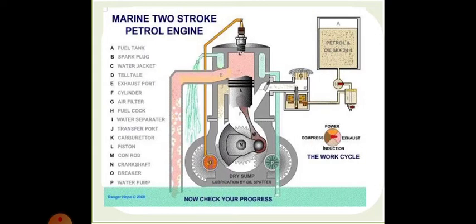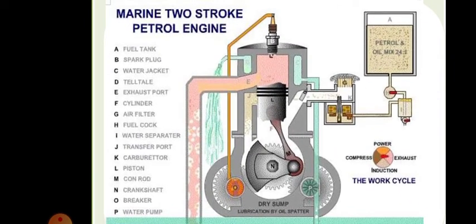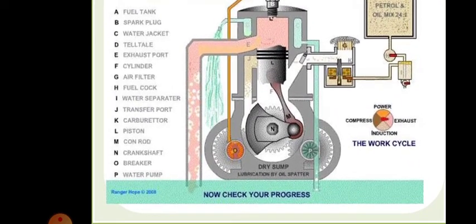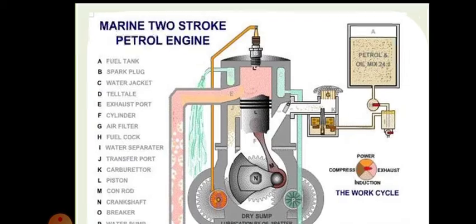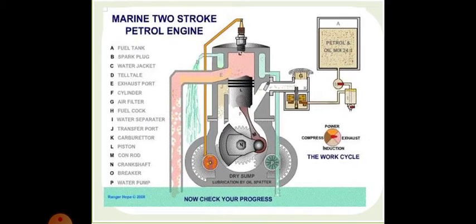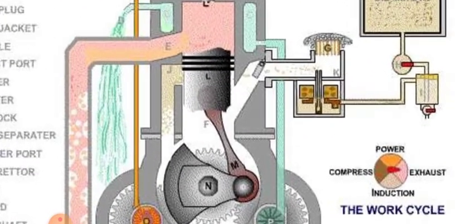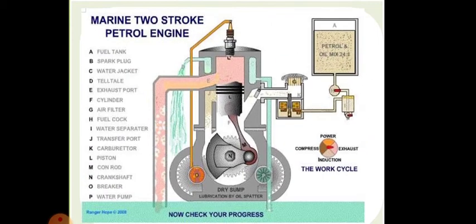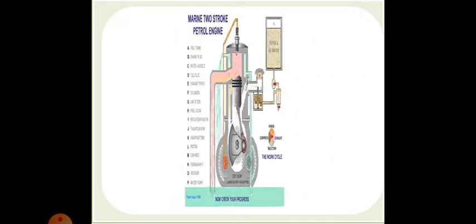The two-stroke engine parts include: fuel tank, spark plug, water jacket, tell-tale, exhaust port, cylinder, air filter, fuel cock, water separator, transfer port, carburetor, piston, connecting rod, crankshaft, breaker, and water pump. The working cycle is: induction, compression, power, and exhaust — this is the work cycle of the two-stroke petrol engine.